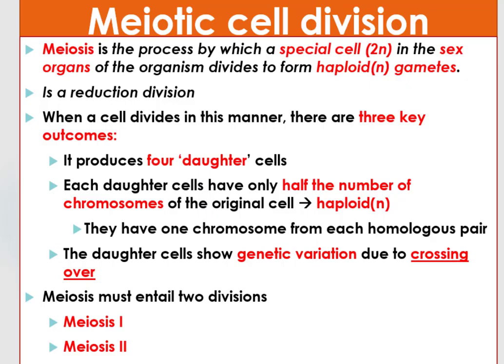Cell division is the process by which a parent cell divides into two or four daughter cells. In eukaryotic organisms, there are two distinct types of cell division. These are mitotic cell division, which produces two identical daughter cells, and meiotic cell division, which produces four different daughter cells.